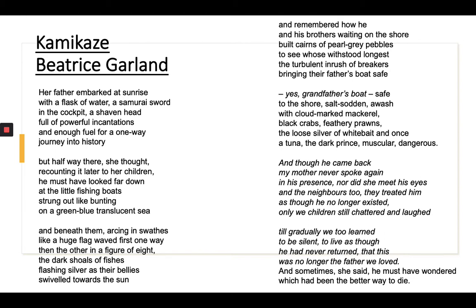Her father embarked at sunrise with a flask of water, a samurai sword in the cockpit, a shaven head full of powerful incantations and enough fuel for a one-way journey into history. But halfway there, she thought, recounting it later to her children, he must have looked far down at the little fishing boats strung out like bunting on a green-blue translucent sea, and beneath them, arching in swathes like a huge flag waved first one way then the other in a figure of eight, the dark shoals of fishes flashing silver as their bellies swivelled towards the sun, and remembered how he and his brothers waiting on the shore built cairns of pearl grey pebbles to see who's withstood longest the turbulent inrush of breakers bringing their father's boat safe. Yes, grandfather's boat, safe to the shore, salt sodden, awash with cloudy marked mackerel, black crabs, feathery prawns, the loose silver of white bait, and once a tuna, the dark prince, muscular, dangerous.